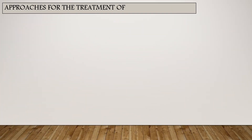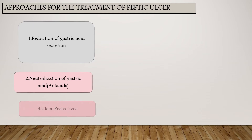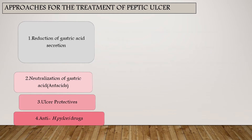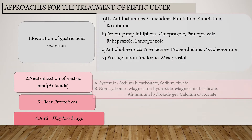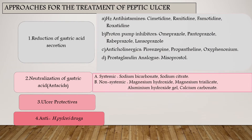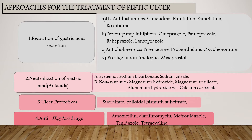Now let's see how we treat peptic ulcer. The first approach is reduction of gastric acid secretion. The second is neutralization of gastric acid. The third is using ulcer protectives. The fourth is using anti-H. pylori drugs. These are the four approaches for the treatment of peptic ulcer.